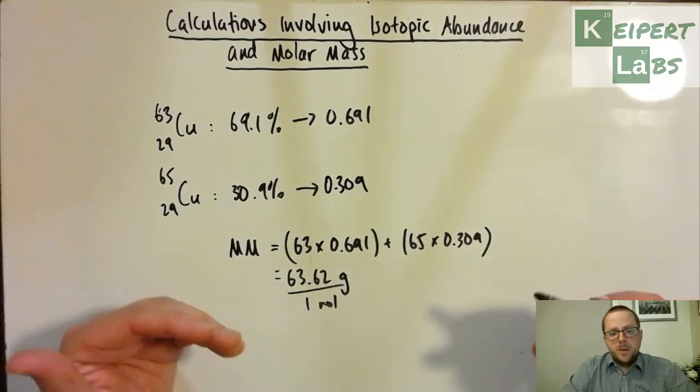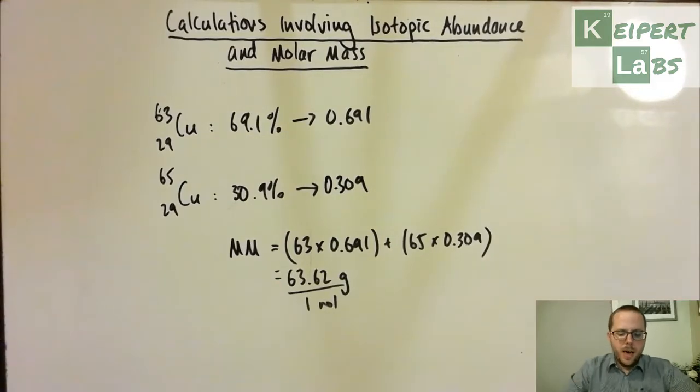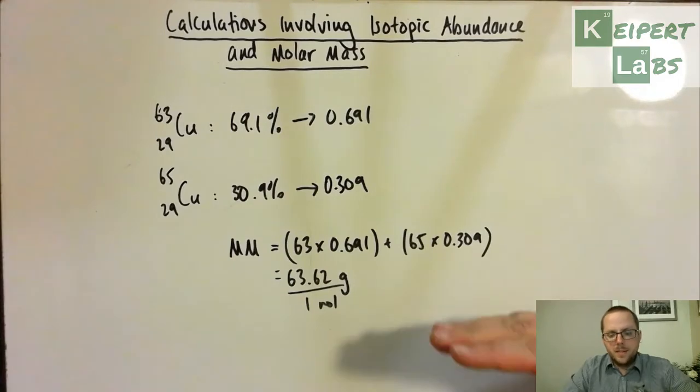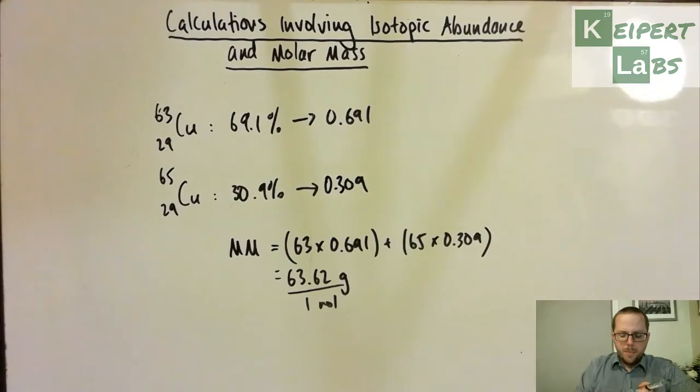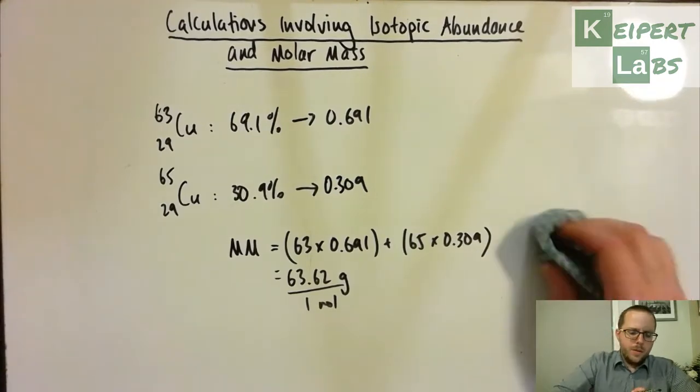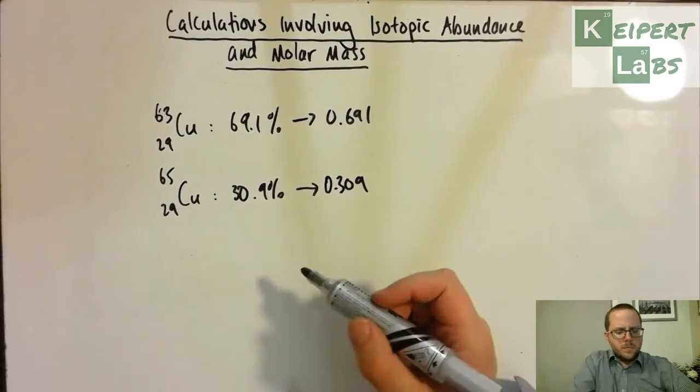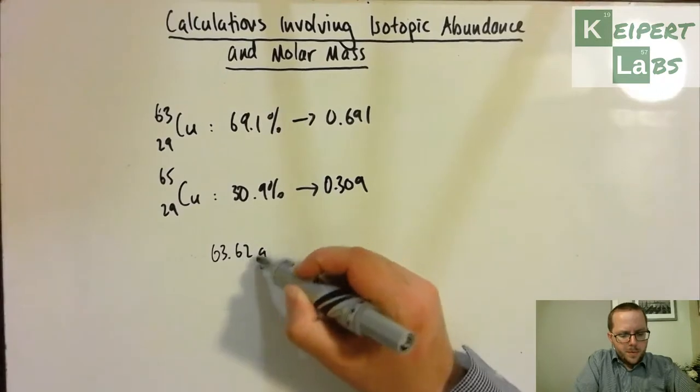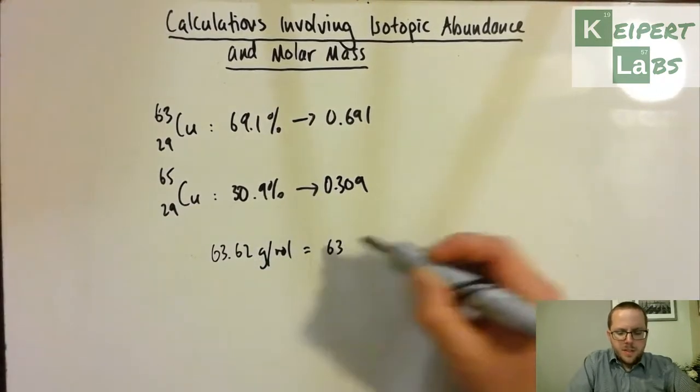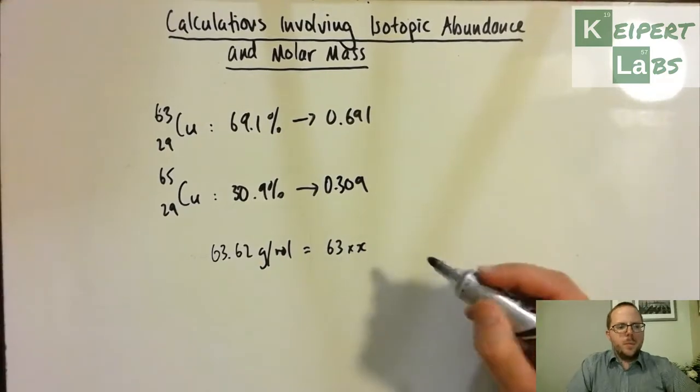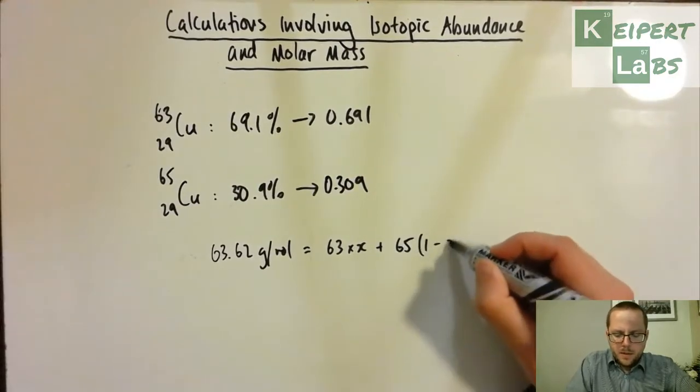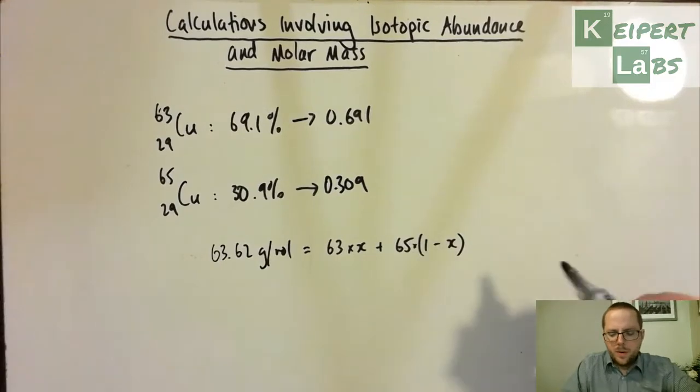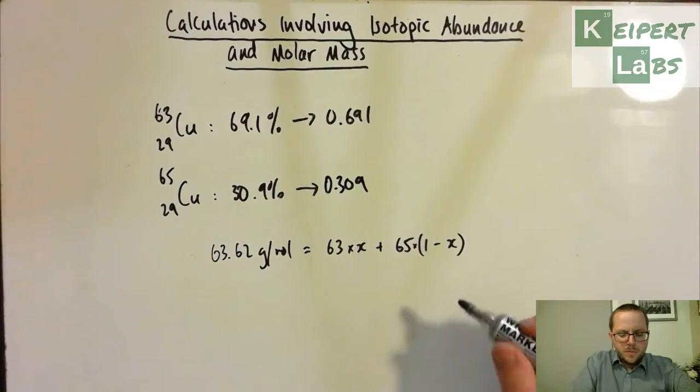Now, another type of question you might come across, we won't work through an example now, is actually trying to get you to say, all right, well, if the average molar mass is this, what are the percentage abundance of each of these particular isotopes. So let's kind of imagine this. So we've got 63.62 grams for every mole is equal to 63 times the probability of x plus 65 times 1 minus x. So thinking about that x will be expressed as a decimal.